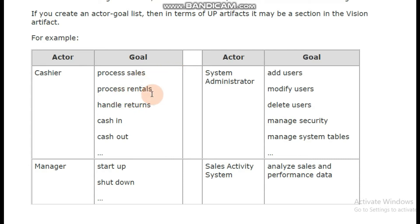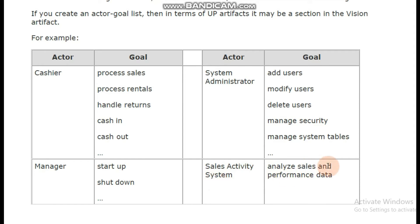For example, if you have rentals, the cashier's goals include: process sale, handle returns, cash-in, cash-out, and other goals. The next actor is the manager, whose goals include: start-up, shutdown, add users, modify users, delete users, manage security, and manage system tables. The sales activity system actor can analyze sales and performance data. You write out all of these in a list to create your actor-goal list.